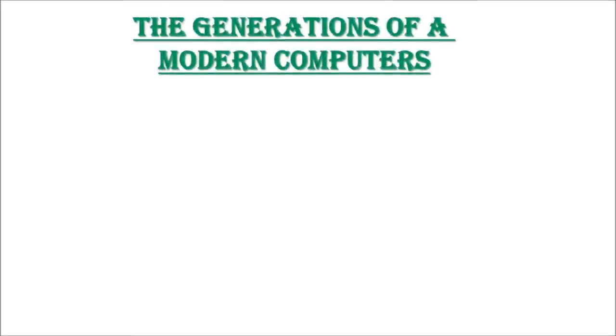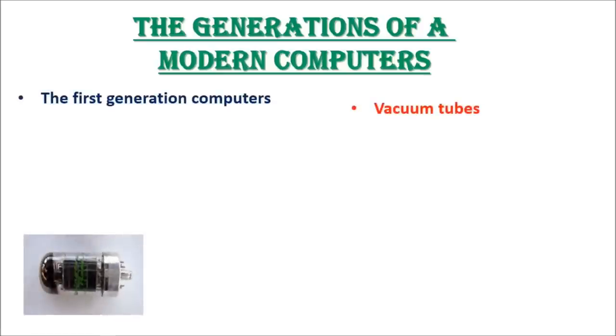Now we will study about generations of modern computer. First generation computers used vacuum tubes. They were big and clumsy, had a very high electrical consumption, and generated large amount of heat.